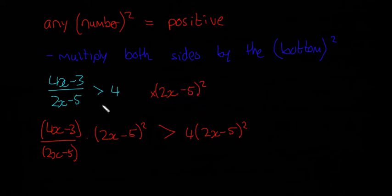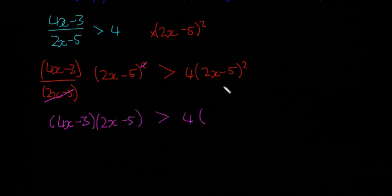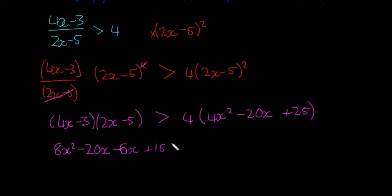This 2x minus 5 is going to cancel with the squared bit here, and then it's just about working it out. So we're going to have 4x minus 3 times 2x minus 5, that's greater than 4 multiplied by 4x squared minus 20x plus 25. So 4 multiplied by 2, that's going to give us 8x squared minus 20x minus 6x plus 15 is greater than 16x squared minus 80x plus 100.